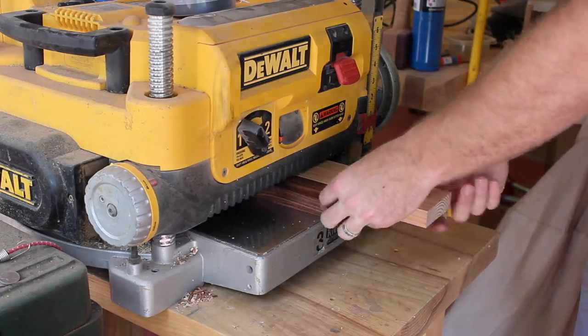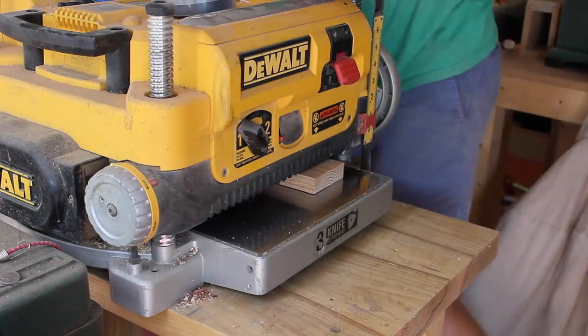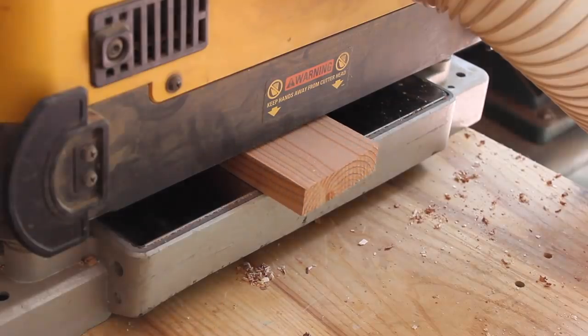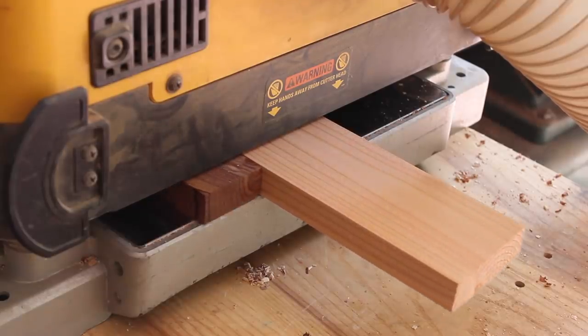To prevent snipe, I ran this 2x4 through with the cocobolo, so I made sure that it was trailing and leading the piece, so that if any snipe happened, it would happen on the 2x4.